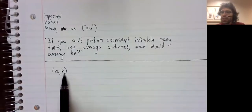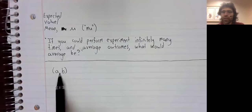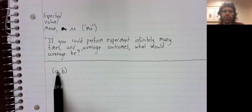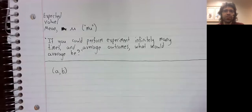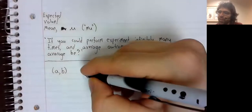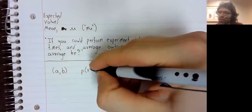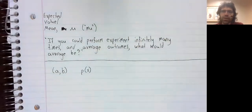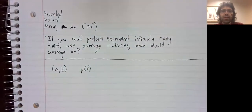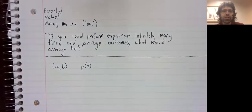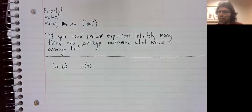Instead, we'll look at a continuous random variable on an interval. And again, one or both of these might be infinite. So this interval might be finite, might be infinite. Whatever the interval is, we have a probability density function p of x.